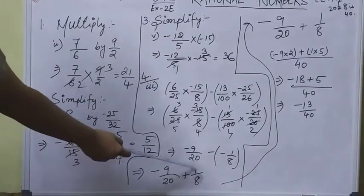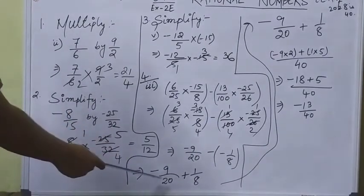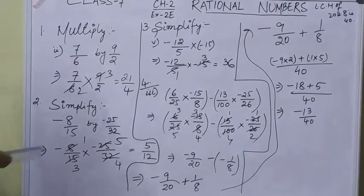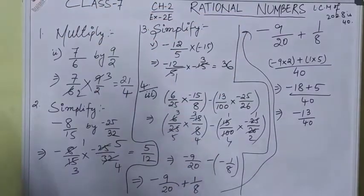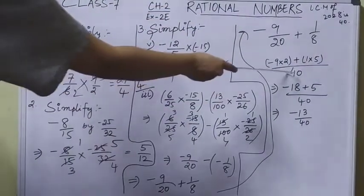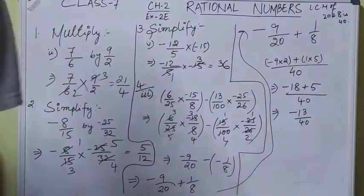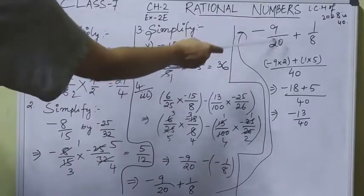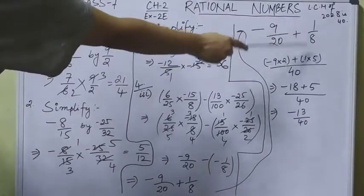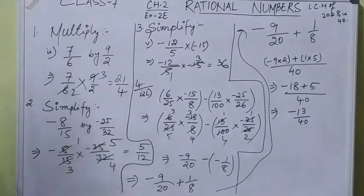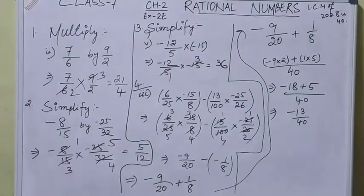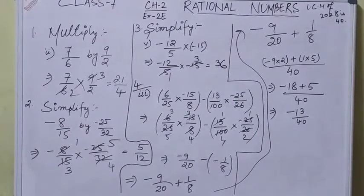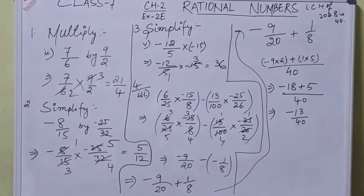We have -9/20 plus 1/8. Both are unlike fractions, so we need to make them like fractions. We find the LCM of 20 and 8, that is 40. -9×2 plus 1×5, that is -18 plus 5 by 40. Your answer is -13/40.